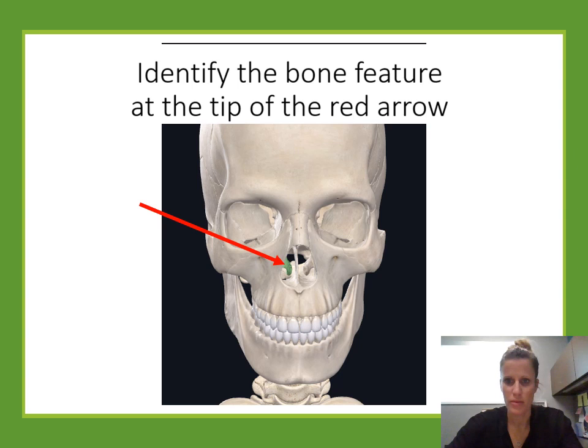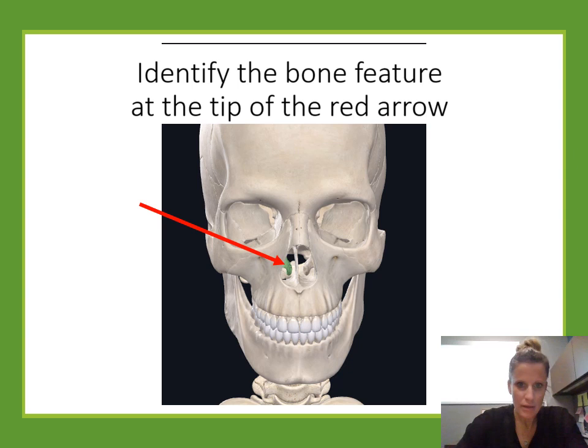The tibia itself is kind of like a T — it's a lot wider at the top and then gets thinner as it goes down. Think T for tibia.